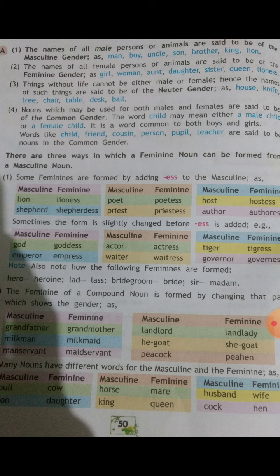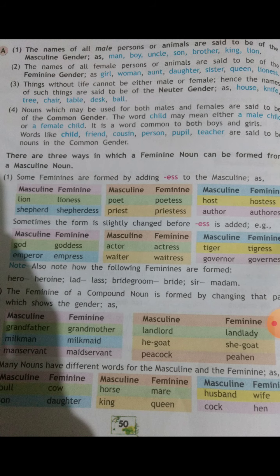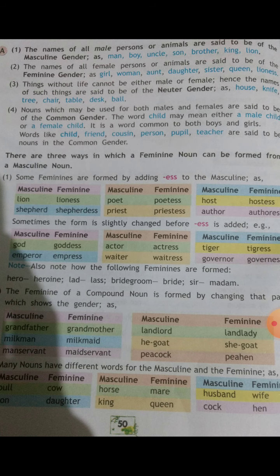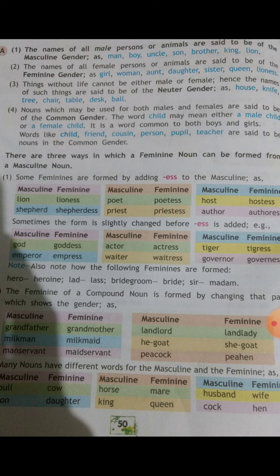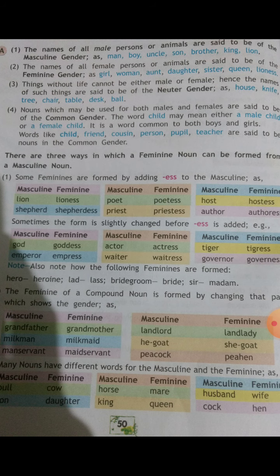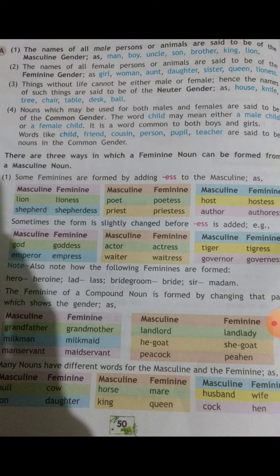The pronouns 'they' and 'them' may be masculine, feminine, or neuter. For example: 'The boys have just returned home. They must be hungry. Give them something to eat' — this is masculine gender. 'The girls have been to the cinema. Ask them if they enjoyed the picture' — this is feminine gender. 'The books on the table are mine. They have many beautiful pictures in them' — this is neuter gender.